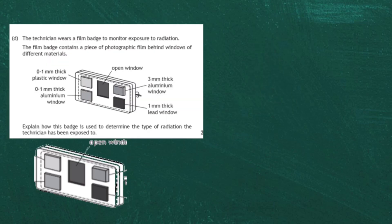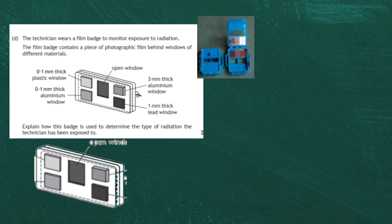Question 12 part d: the technician wears a film badge to monitor exposure to radiation. The film badge contains a piece of photographic film behind windows of different materials. No light can get into the badge, but the windows allow in different types of radiation depending on the material in front of them. These badges have been used for years and are now being superseded by modern electronic badges that can be plugged into computers.